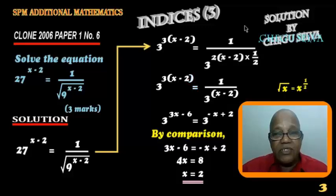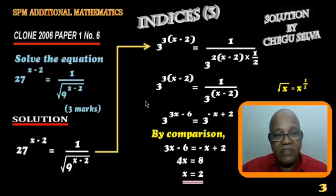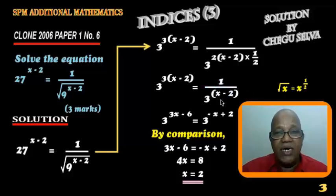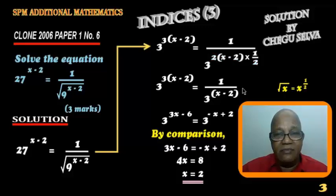Now you simplify this on your right. So three to the power of three, to the power of X minus two, equals one over three to the power of X minus two. The two and two cancel.